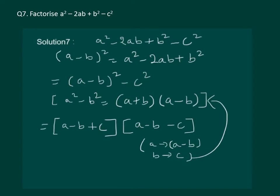Using our identity, we get a minus b plus c into a minus b minus c. After reaching this step, we check if we can simplify further. It is easily visible that these terms cannot be simplified further, and hence we have the required factors of our question.